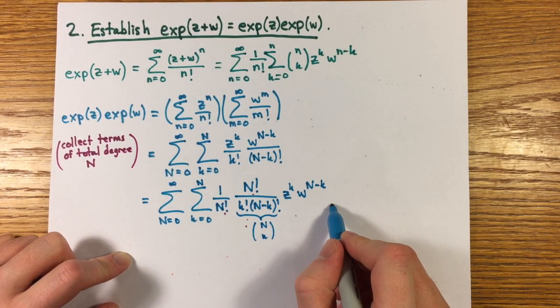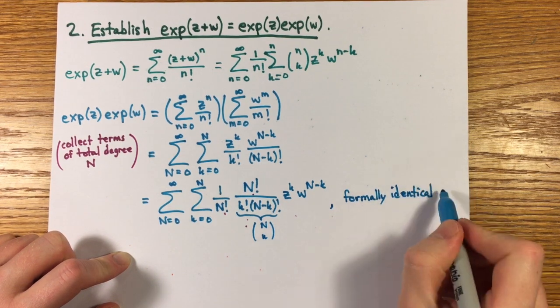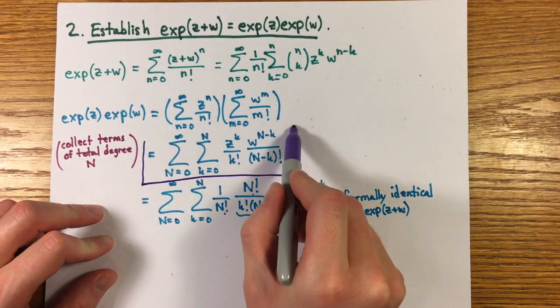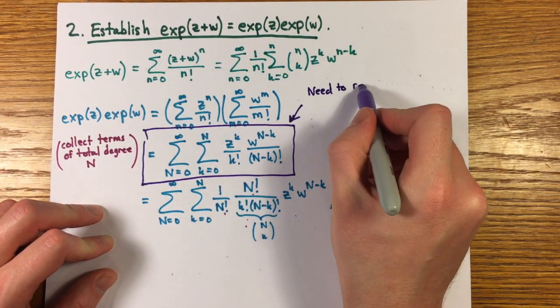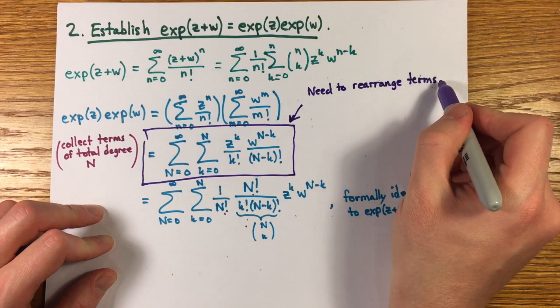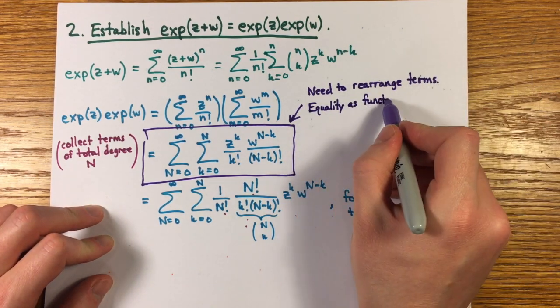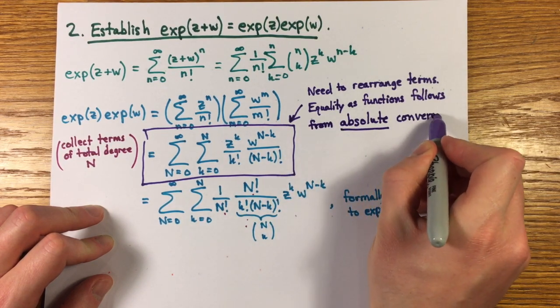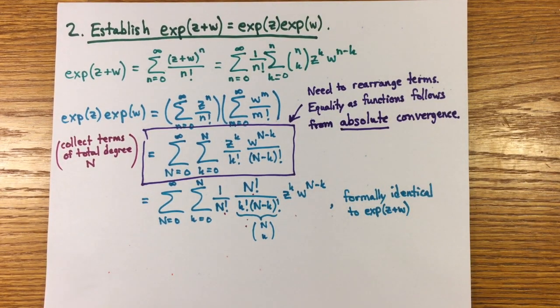A key point not usually emphasized when students first encounter such series in a second semester of calculus is that this formal identity, which involves rearrangement of the terms of the series, is justified at the level of functions converging to the same number and not just as formal power series by the absolute convergence of the series, though this doesn't hold in general for a conditionally convergent series.